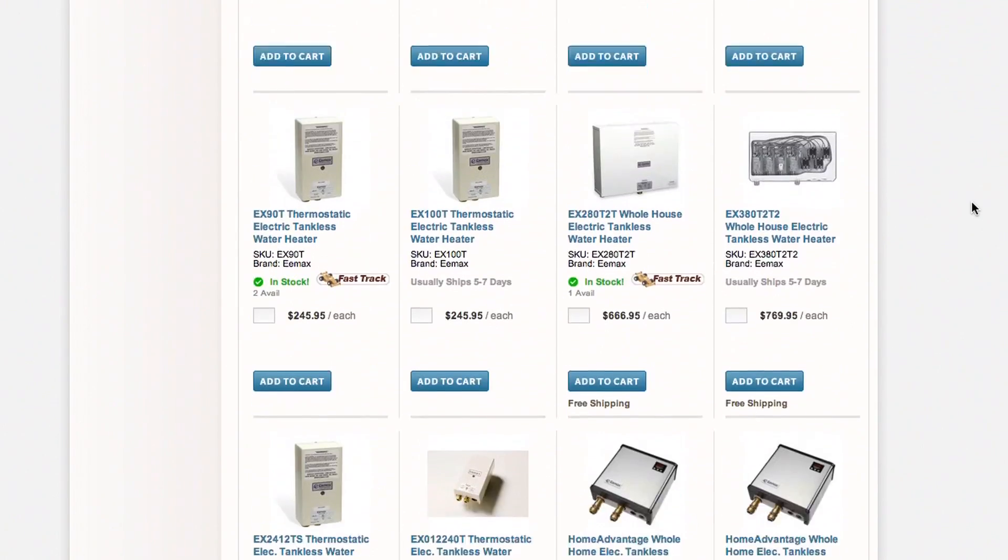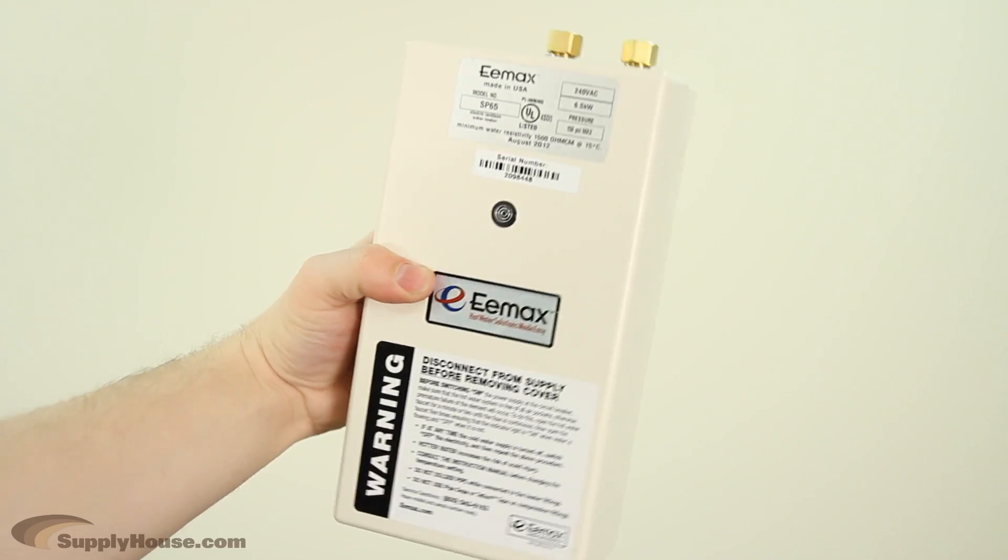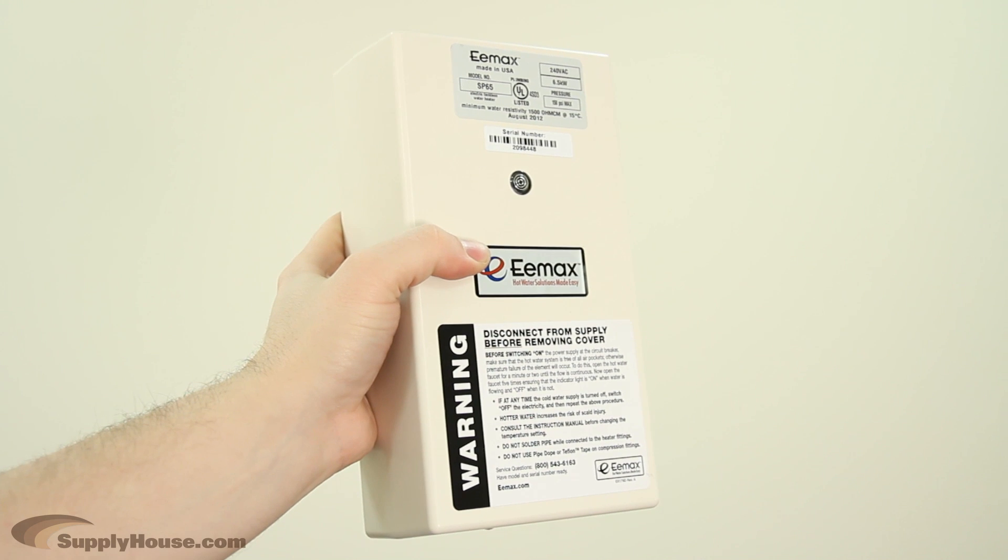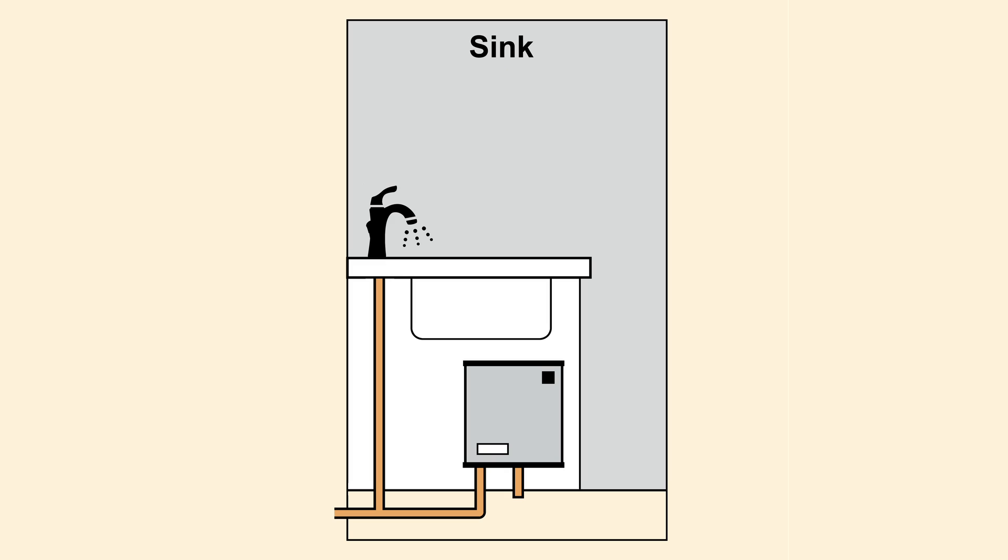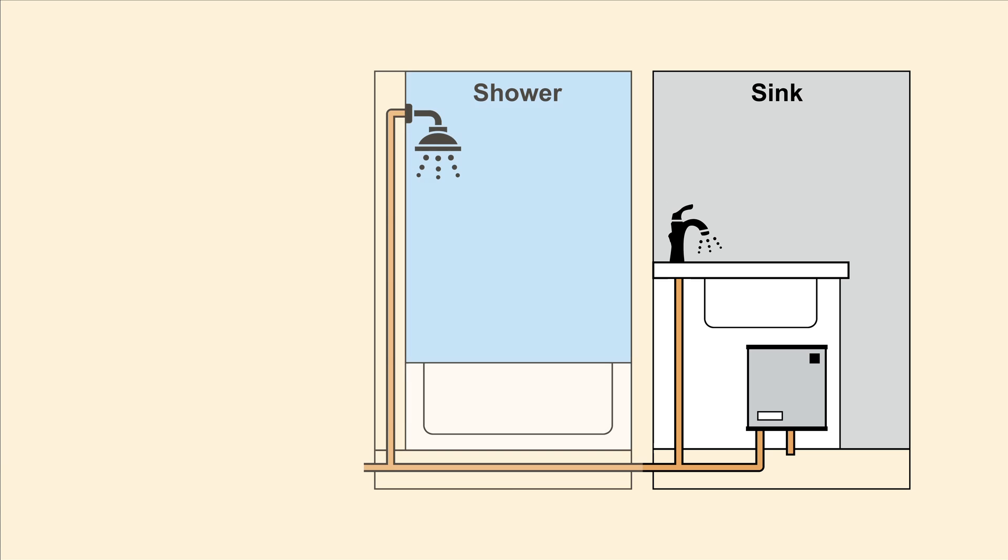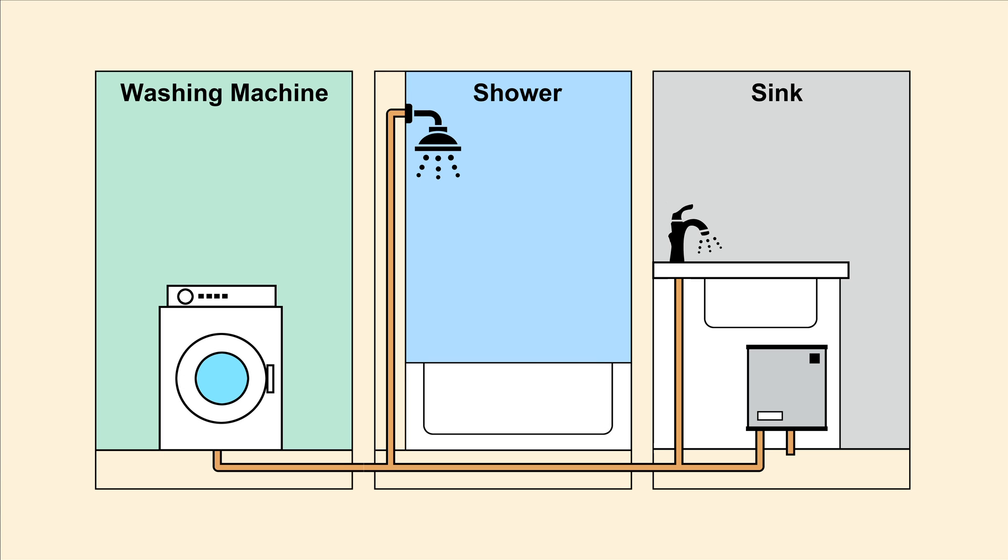EMAX offers units in either whole house or point of use. Point of use heaters provide an ideal solution for small applications such as a garage with one sink. Different sizes allow you to add additional fixtures such as showers and other appliances in small residences.